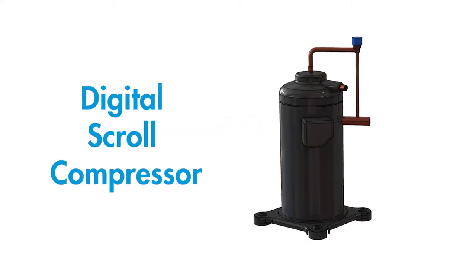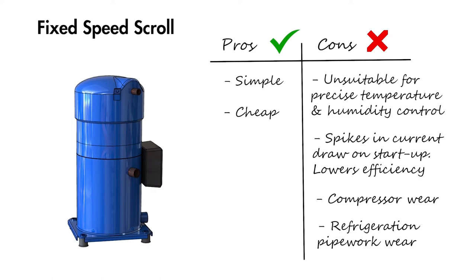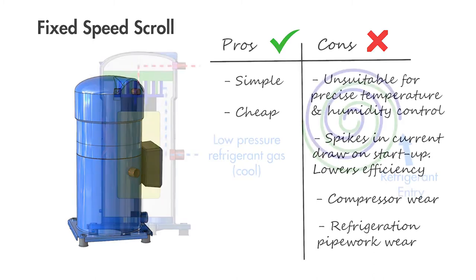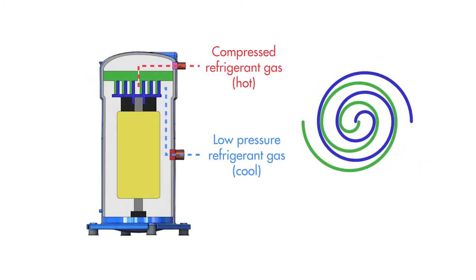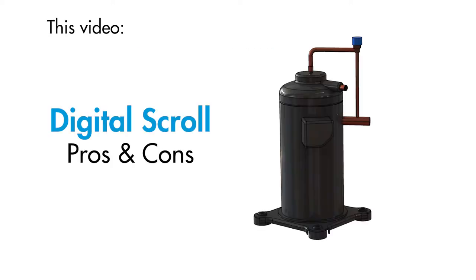The digital scroll compressor is a form of scroll compressor commonly used in commercial air conditioners. It's more complex than the fixed-speed scroll compressor which we covered in our previous video. If you haven't seen our previous video make sure you check it out. It also covers the basic operating principle of scroll compressors which will be handy if you don't already understand it. In this video we will cover the digital scroll compressor and its pros and cons.